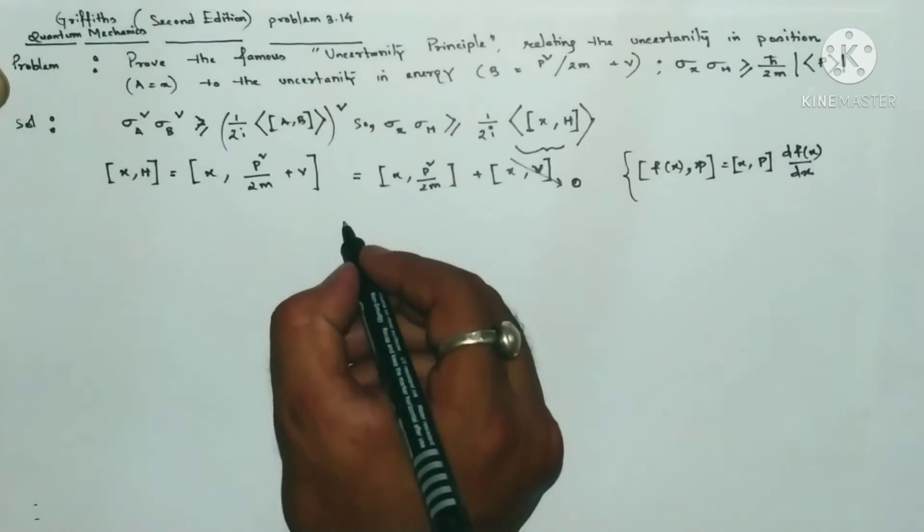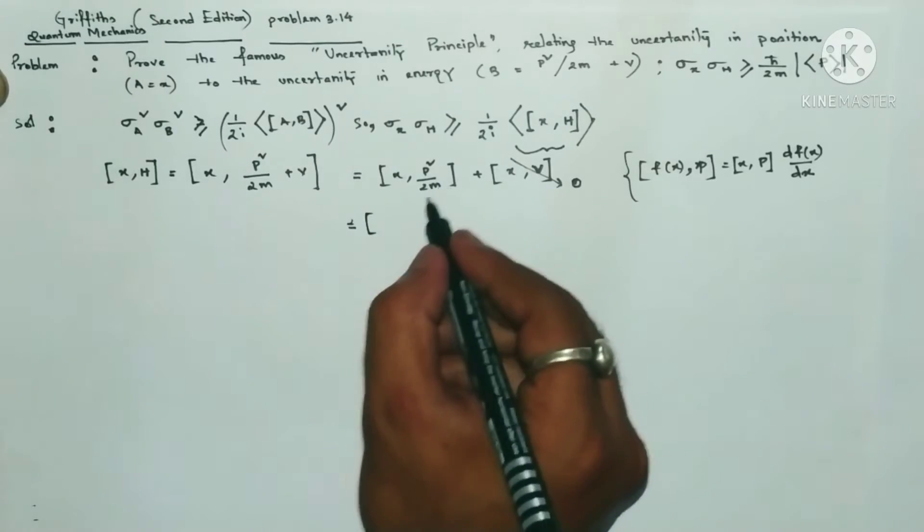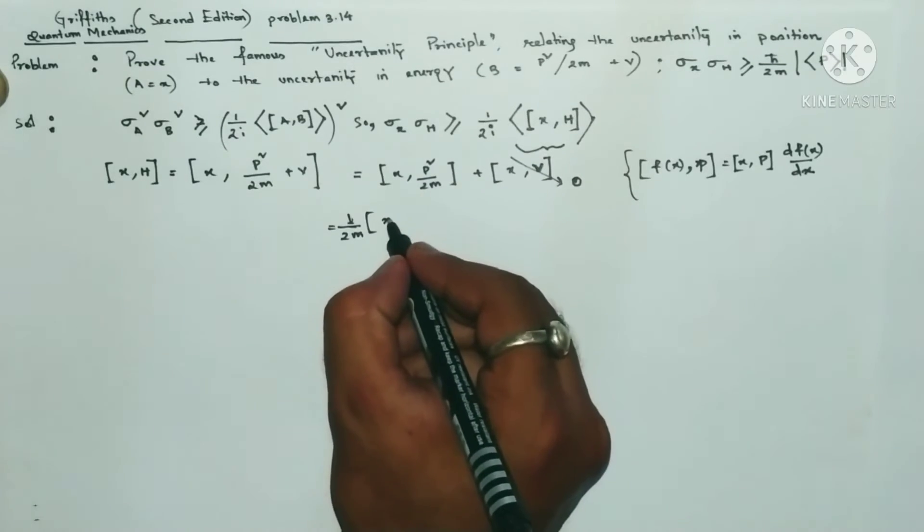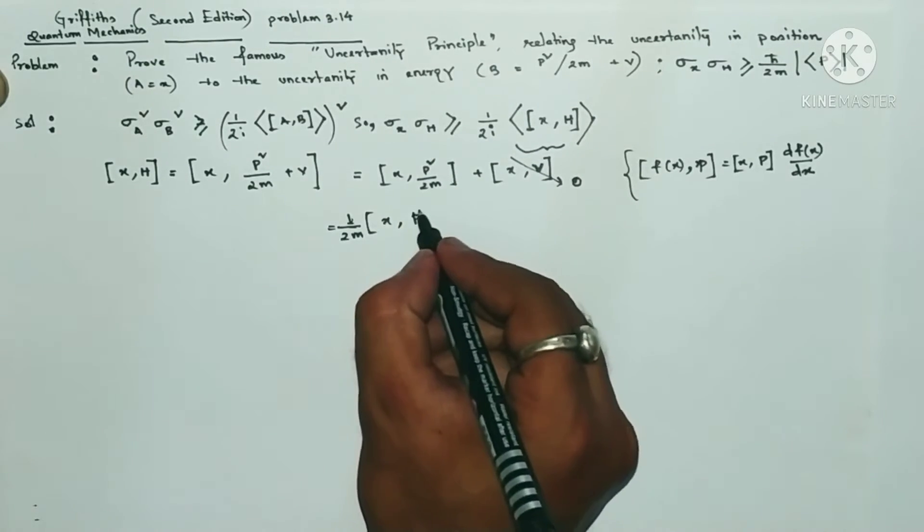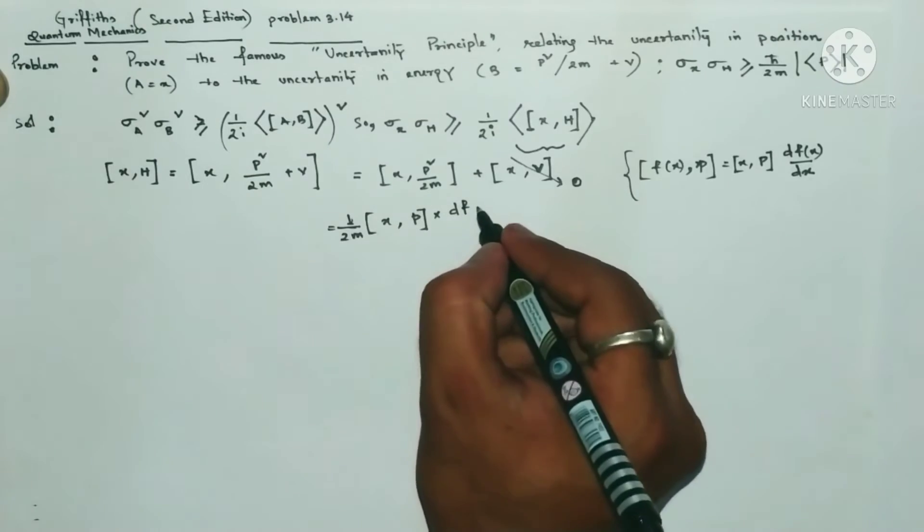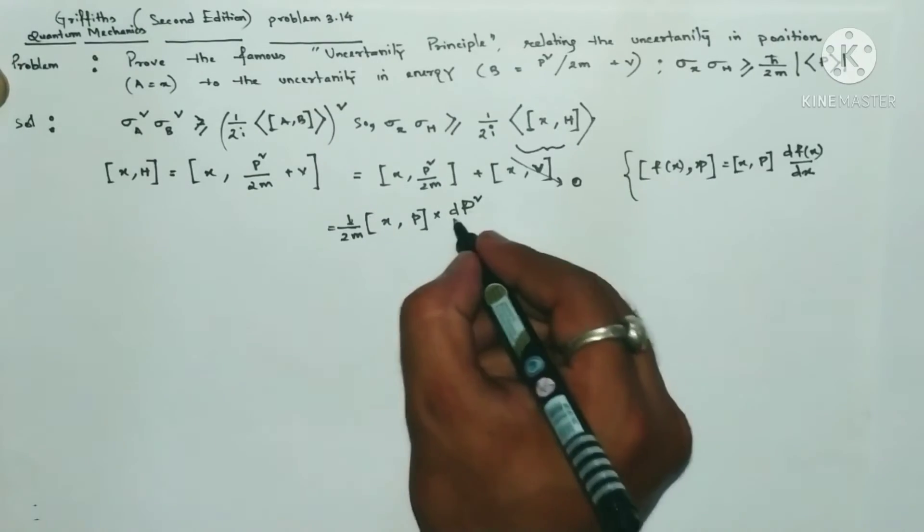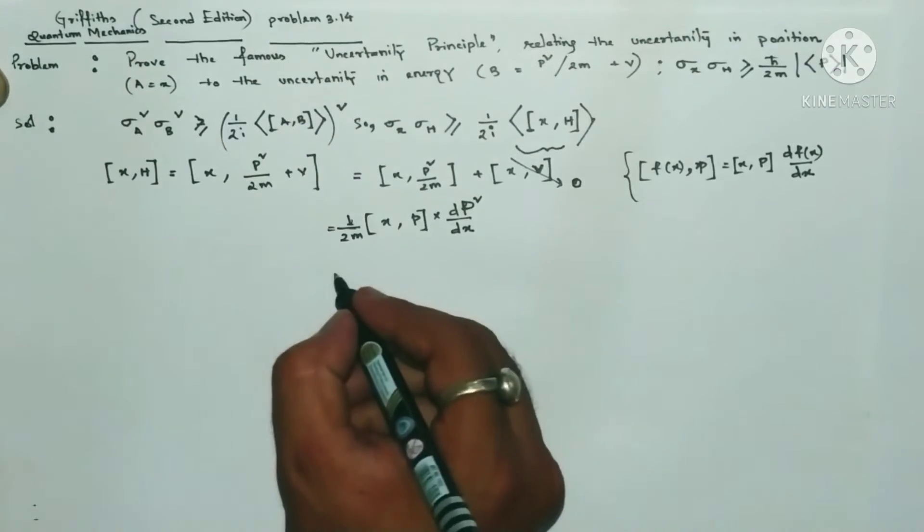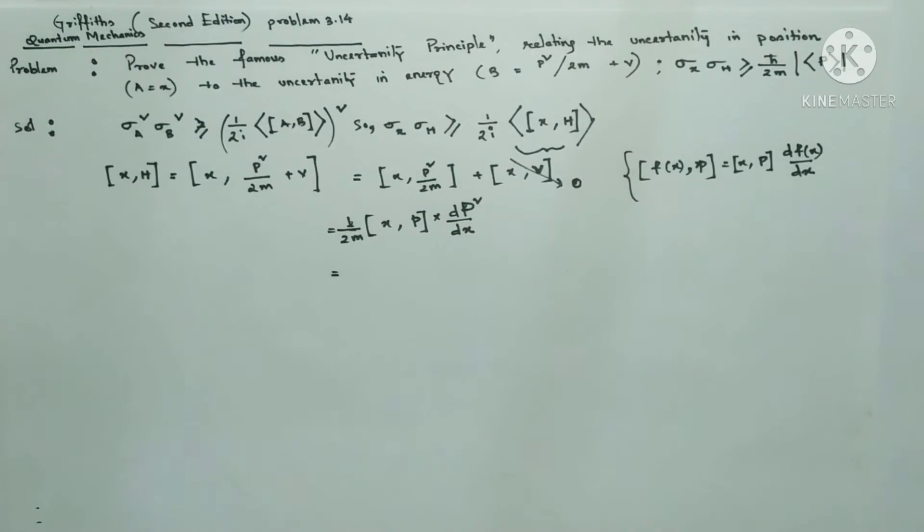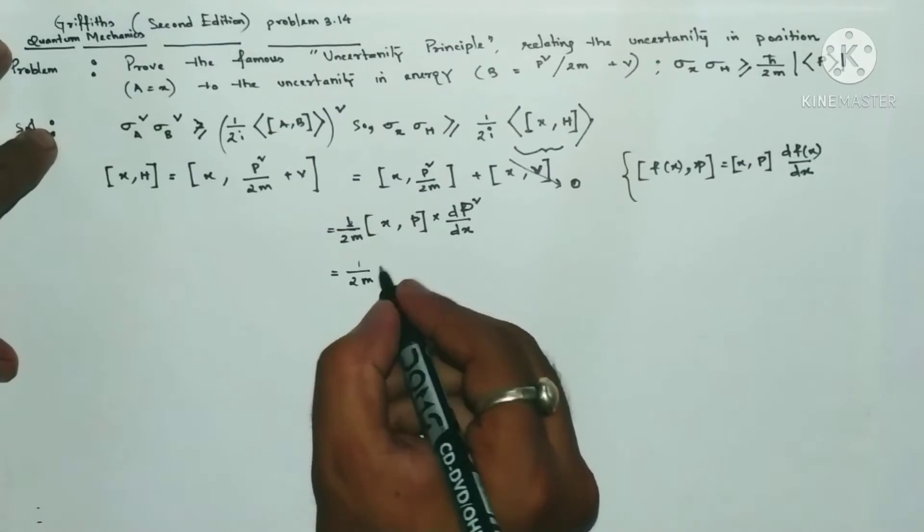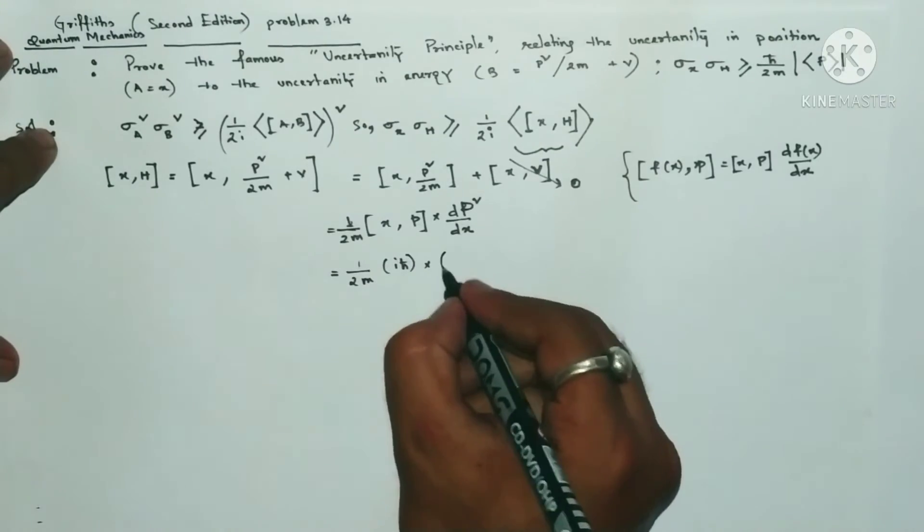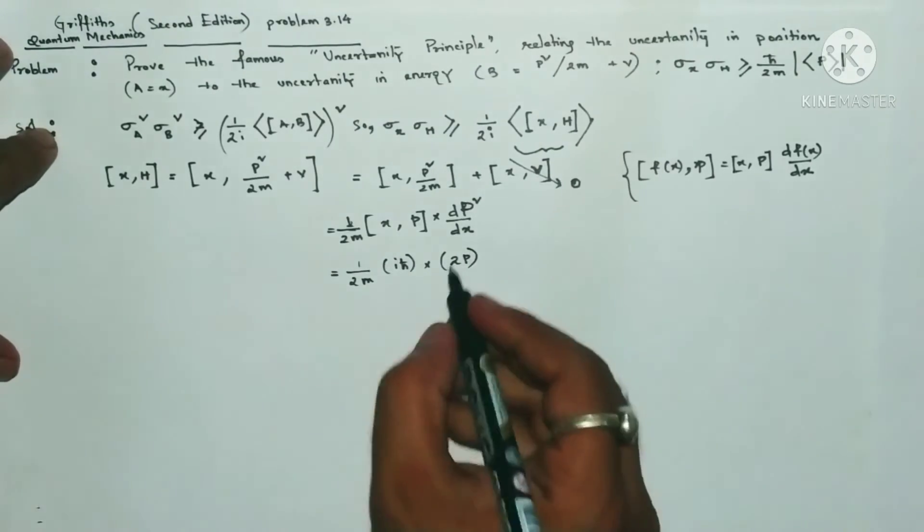Now here the same thing follows. We will write, first let me take one by 2m outside, then we have X comma P, and this is a function of P, so you multiply with the differentiation of this function, which is P squared with respect to P.